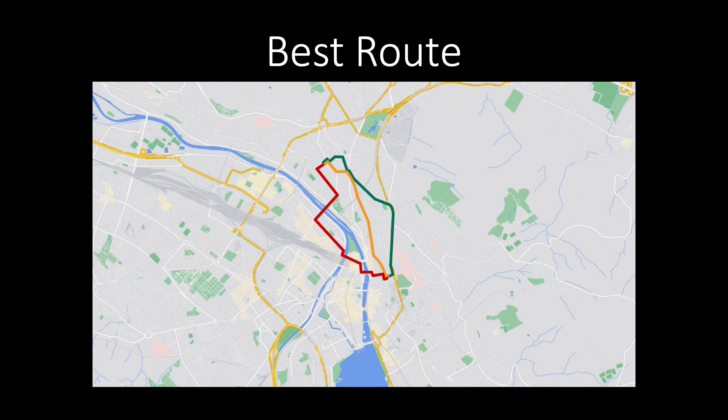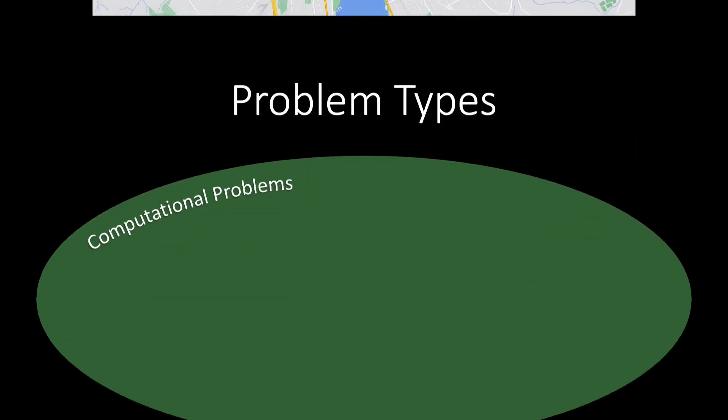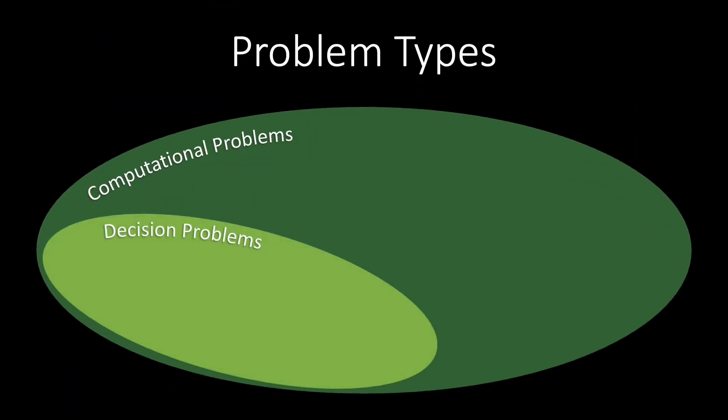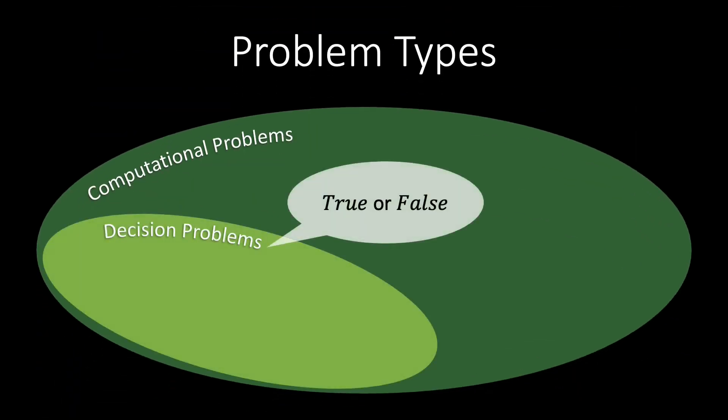But maybe you don't care about the absolute best route. All you want is a route that takes at most 20 minutes. Asking about a route that takes at most 20 minutes is not an optimization problem, but a decision problem. In a decision problem, the answer is always either true or false.